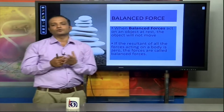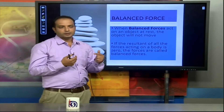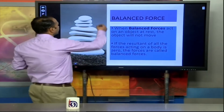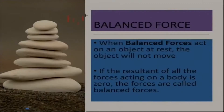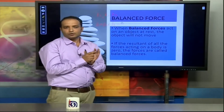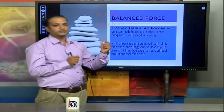The net force means the total force applied on the object. Suppose we have three forces F1, F2, and F3. If the sum of F1, F2, and F3 is equal to 0, we can say that the resultant force is 0, and a balanced force is acting on the object.